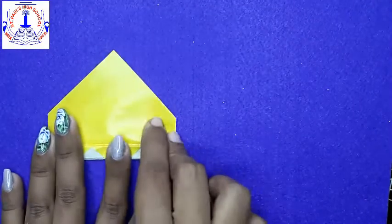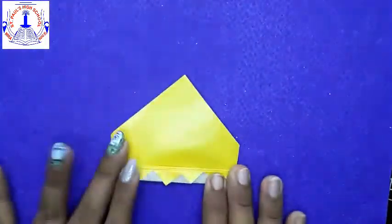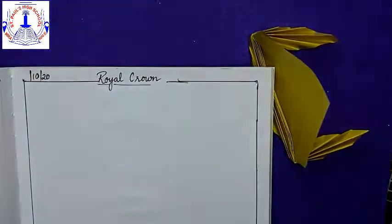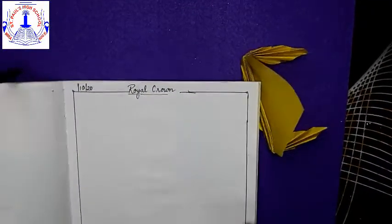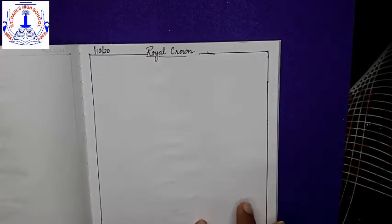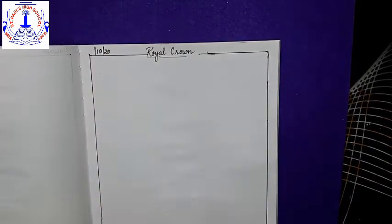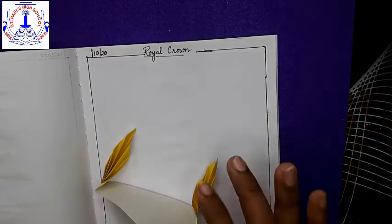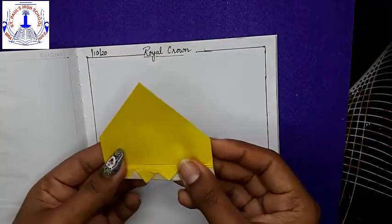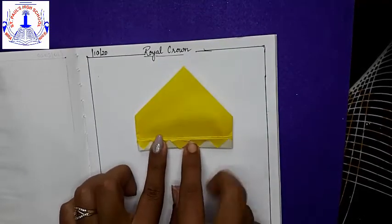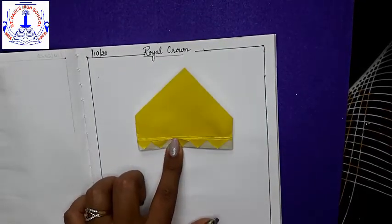Okay? So now it's time to stick. Keep it this way. Just crease it well. Just keep it this way sideways. And then take your craft notebook. On the right hand side, you're going to stick. So put the topic name, royal crown. Put the date and the borderline. So see, how you're going to stick this way.